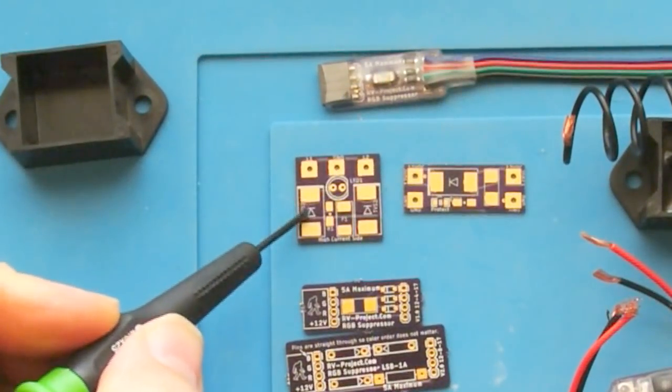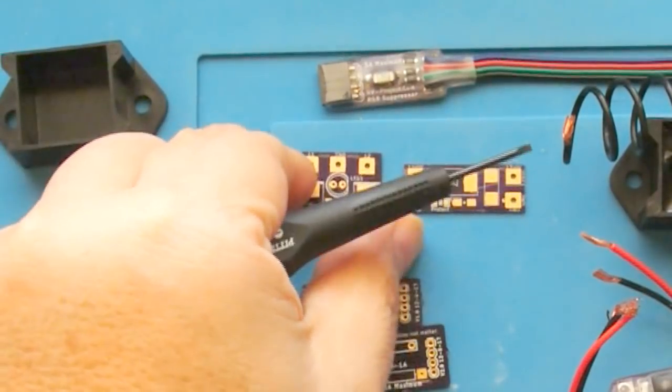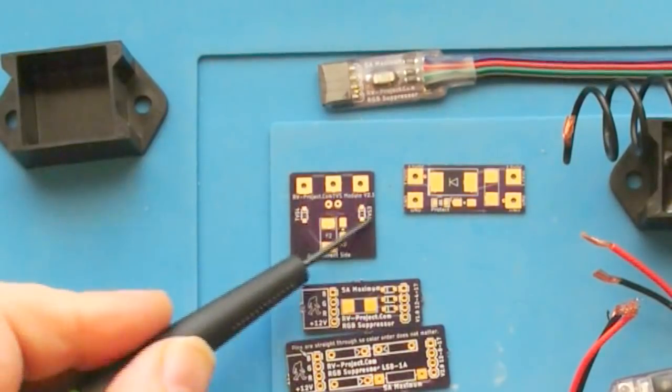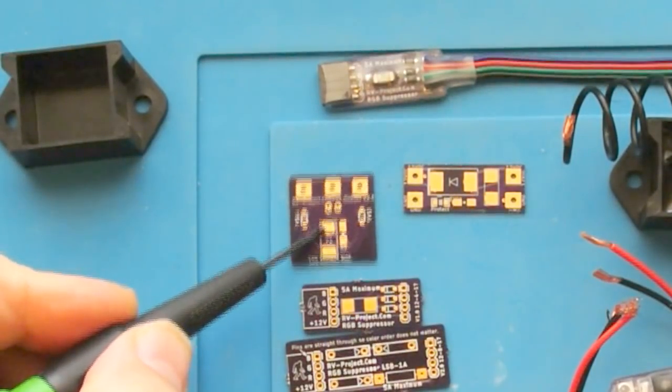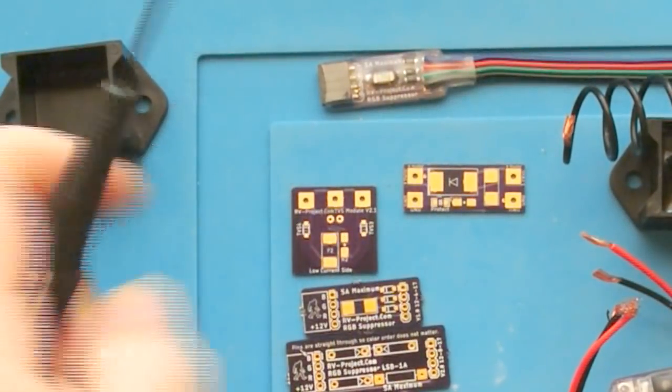This can handle several different types of TVS. We have on this side high current TVS here and here, and if you flip it over, we have lower current TVS here and here along with a fuse and current limiting resistor for the LED.